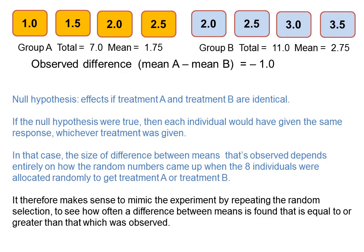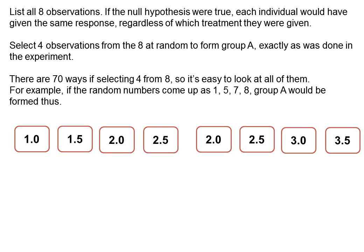We can mimic this procedure by repeating the random selection to see how often a difference between means is found that is equal to or greater than that which is observed, minus one. That's a p-value, that's all we have to do. So we start by listing all eight observations. If the null hypothesis were true, each individual would have given the same response, regardless of which treatment they'd been given, so they're all the same colour now. We select four observations at random from group A to form group A, exactly as was done in the real experiment. There are actually 70 ways of selecting four from eight, so it's quite easy to look at all of them, but we could also do it by just repeating many times a random selection of four from eight and do it by simulation, essentially.